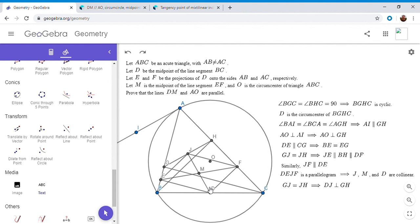Because DJ is DM. They're the same line. So since DJ is perpendicular to GH, and AO we mentioned is perpendicular to GH. Then DJ has to be parallel to AO. And so DM has to be parallel to AO. And that solves the problem. So this is a fun little one. So I hope you all enjoyed it.